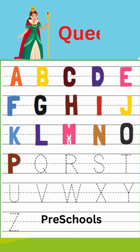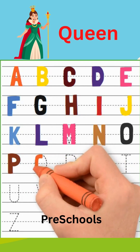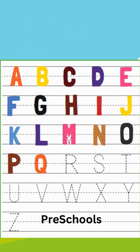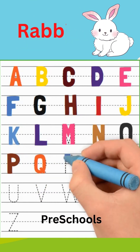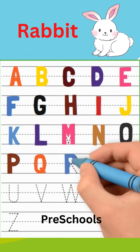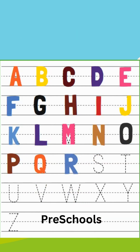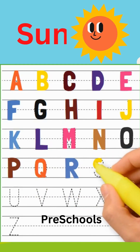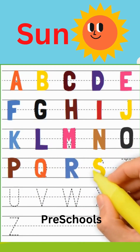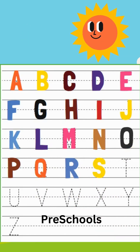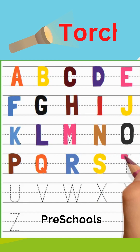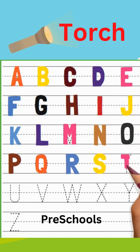Q, Q for queen. R, R for rabbit. S, S for sun. T, T for torch.